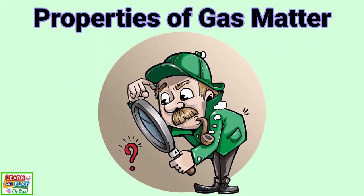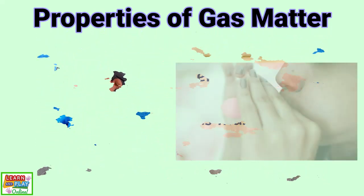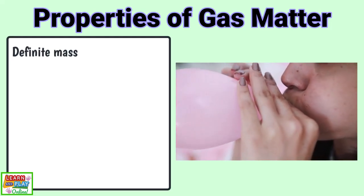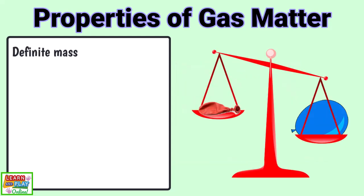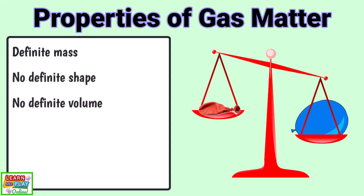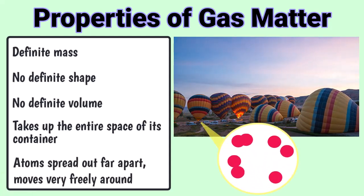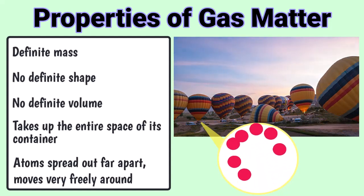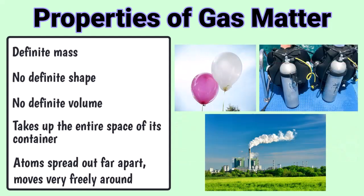The last state of matter to explore is gas. Gases are harder to identify because they are often invisible. However, they are still considered matter because they take up space and definitely have mass. The air you breathe is an example of a gas. If you blow air into a balloon and compare its mass to that of an empty balloon, the one you blew up will have more mass than the empty one. Gas matter has no definite shape or volume, and gases take up the entire space of their container. This is because the atoms in gas matter are spread so far apart that they can move freely in and out of the space it uses. If not contained, the gas will continue to move and spread out indefinitely, just like the steam coming from this boiling kettle. Some examples of gas include helium, oxygen and carbon dioxide.